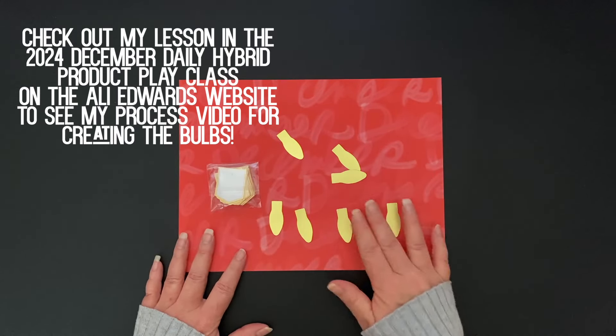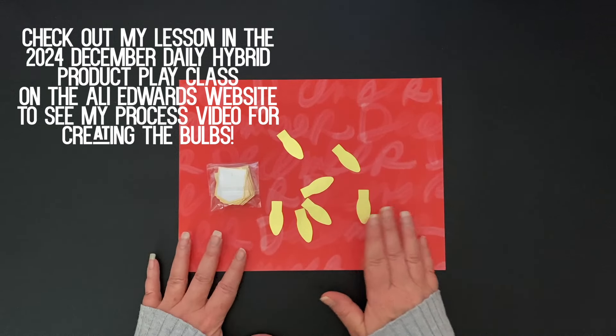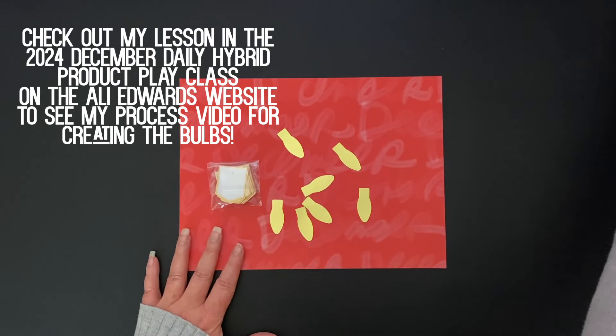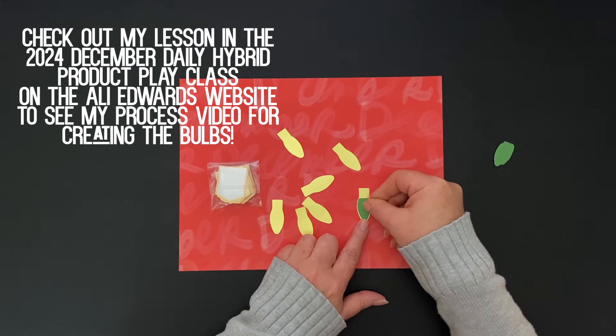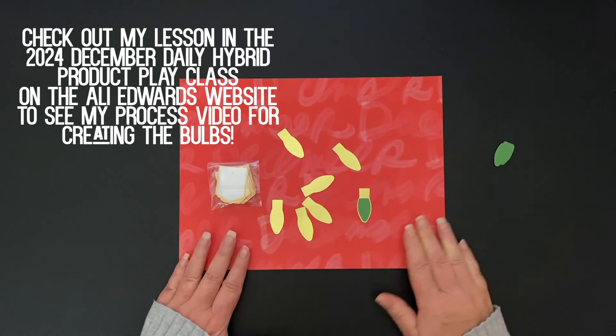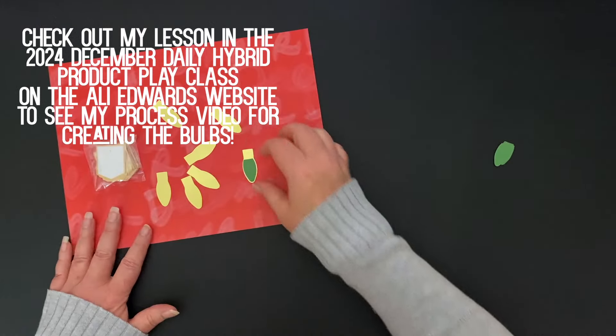They're the same size as the vellum bulbs in the main kit, just done on vinyl with paper behind them. I also cut out the center colored parts of the bulb separately in several different colors so I can see which ones I like the best.